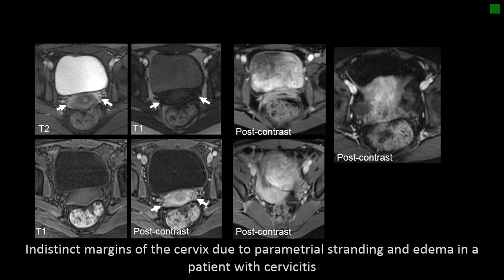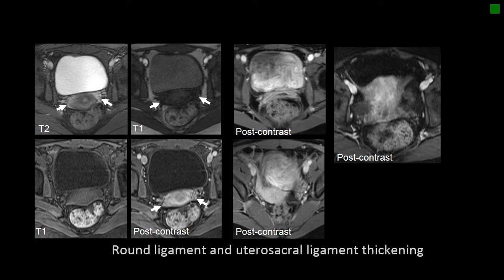This is an MRI case where we can see in the T2 image in the upper left-hand corner, highlighted by white arrows, edema within the parametrial fat. We can also see some abnormal enhancement post-contrast, and a little bit of thickening of the round ligament as it extends from the uterus. The findings with cervicitis are often very subtle. Here are arrows highlighting subtle findings of round ligament and uterosacral thickening, but that's a challenging call to make.